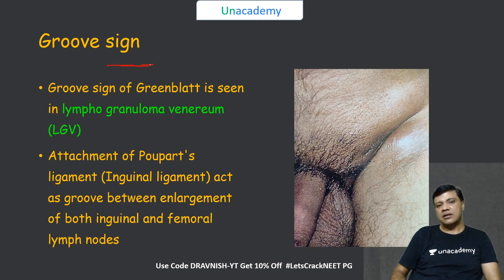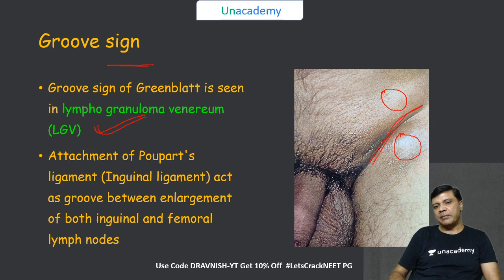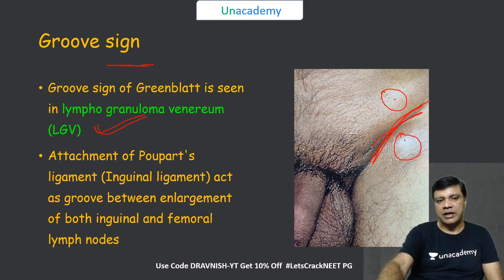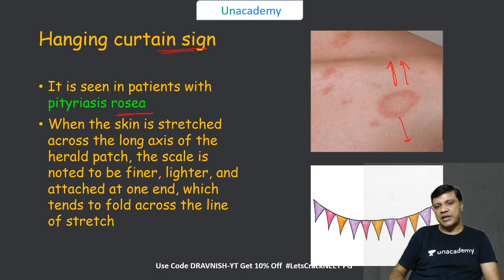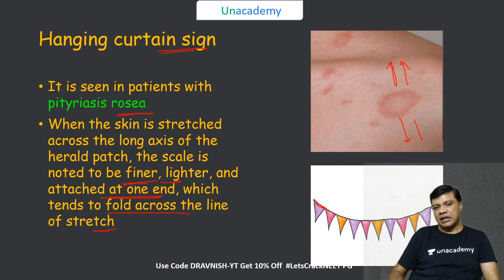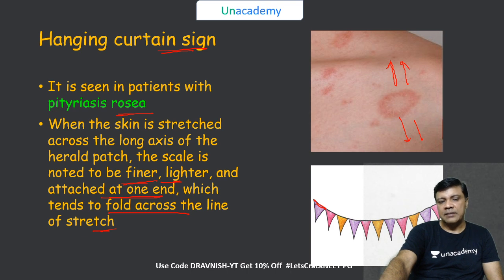The groove sign of Greenblatt is a feature of lymphogranuloma venereum. There is swelling of the inguinal and femoral lymph node groups, with the inguinal ligament (Poupart's ligament) acting as a groove between them — this is the positive groove sign. The hanging curtain sign is a feature of pityriasis rosea, where scales stretched along the axis of the herald patch are finer, lighter, attached at one end, and tend to fold across the line of stretch.